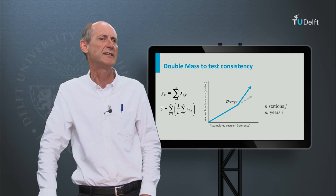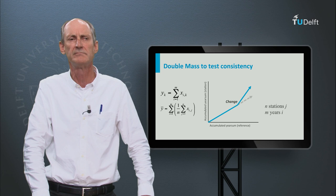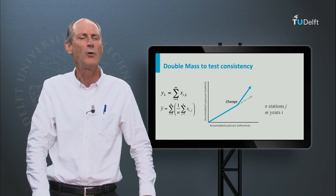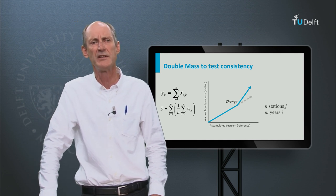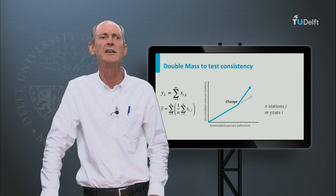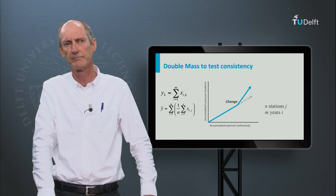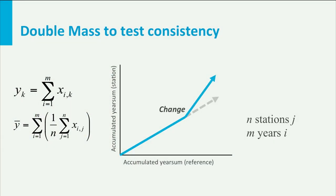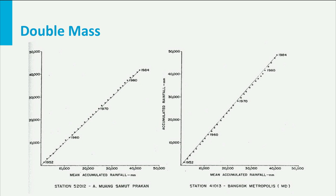If you have many point observation data, then it is sometimes hard to assess the consistency of the data. As I said, many things can go wrong in the measurement and processing of precipitation data. A simple way of identifying stations with problems is to plot double mass curves. On the horizontal axis we see the accumulated means of a number of stations plotted against the accumulated values of a single station. If something is wrong with that station, it may show a haphazard pattern or a kink in the line. Here you see a few double mass plots of Bangkok again. They look reliable, although the right one has some deviations around 1978.